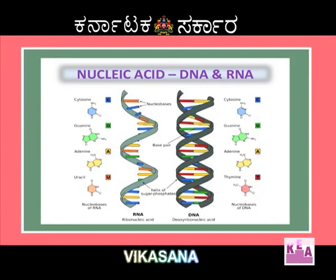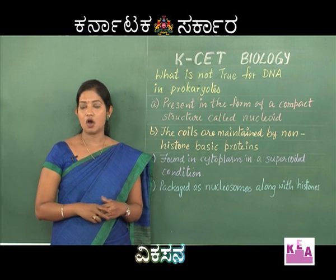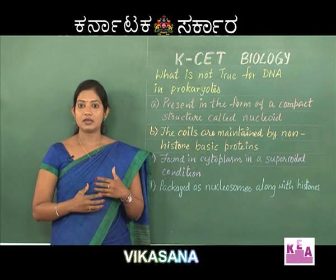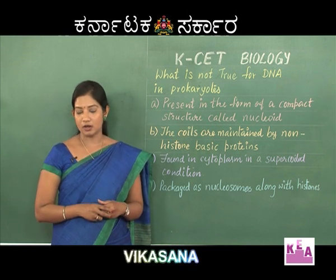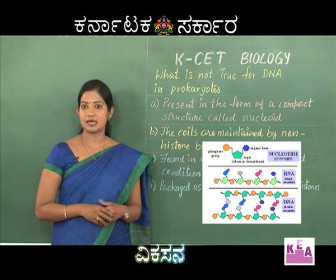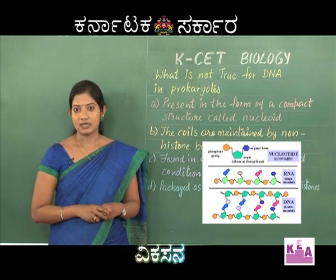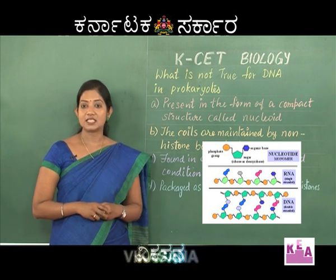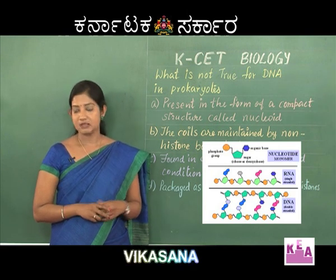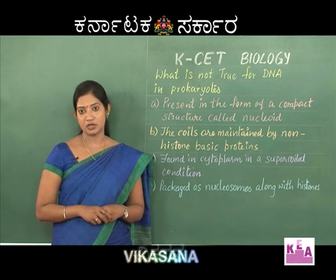The nucleic acids can be classified into two types: DNA and RNA. At the beginning, when earth started to evolve, RNA was the genetic material. But later, when earth became stable, RNA was replaced by DNA. The reason for this is DNA is more stable when compared to RNA.